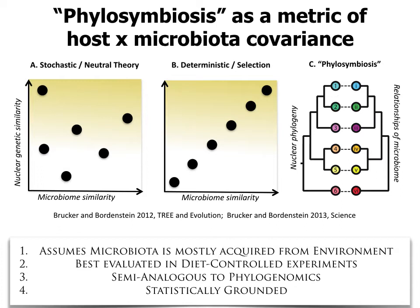Phylosymbiosis is where the phylogeny of the host nuclear genome or mitochondria parallels the dendrogram relationships of the microbial communities. This is not co-speciation or co-adaptation — it's an ecological metric for community relationships compared to the phylogenetic history of the host. For example, species one and two might share 90% of their gut microbes, while species one and four might only share 50%. This is not co-evolution; it's simply parallel trees. The model works best in diet-controlled studies.